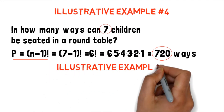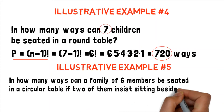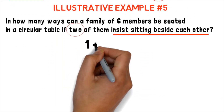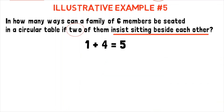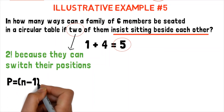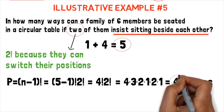Illustrative example number 5: In how many ways can a family of 6 members be seated at a circular table if 2 of them insist on sitting beside each other? If 2 members insist on sitting together, we count them as 1, so 1 plus the remaining 4 members gives n equals 5. The arrangement of the 2 members is 2 factorial because they can switch positions. Using the circular permutation formula: P equals (n minus 1) factorial times 2 factorial, which equals 4 factorial times 2 factorial, giving us 48. So there are 48 ways.